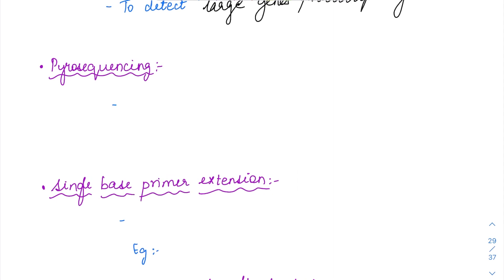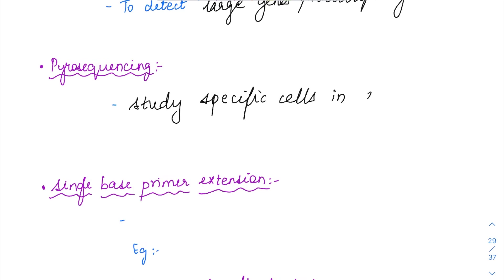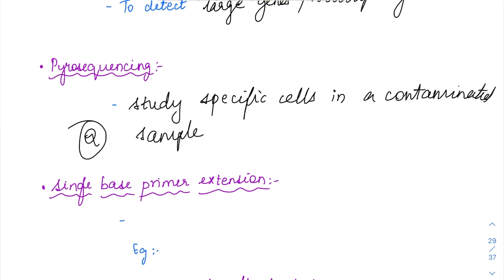Pyrosequencing — pyro means something related to heat. In pyrosequencing, it is usually used to detect cells in which there is contamination. So from a contaminated sample you want to extract only certain specific cells and then sequence them. For that environment wherein you have to study specific cells in a contaminated sample, you can use pyrosequencing.